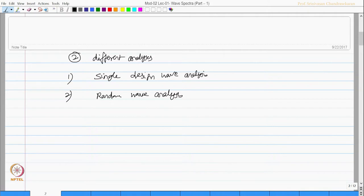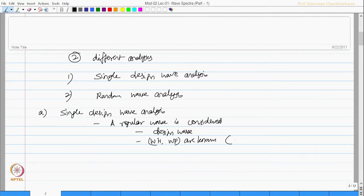In single design wave analysis, a regular wave is considered. This wave is termed as a design wave whose wave height and wave period are known. They are given as input. Return period of this design wave is generally chosen to be 100 years.